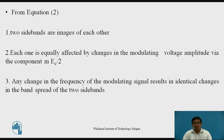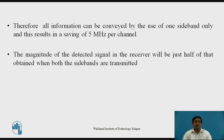Therefore, we require only one sideband. All information can be conveyed by the use of one sideband only, resulting in a saving of 5 MHz per channel, since we are not using the second sideband. The magnitude of the detected signal at the receiver will be just half of that obtained when both sidebands are transmitted.